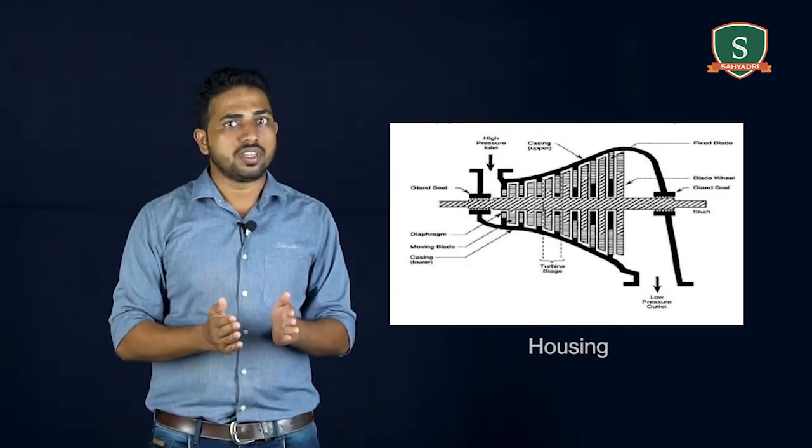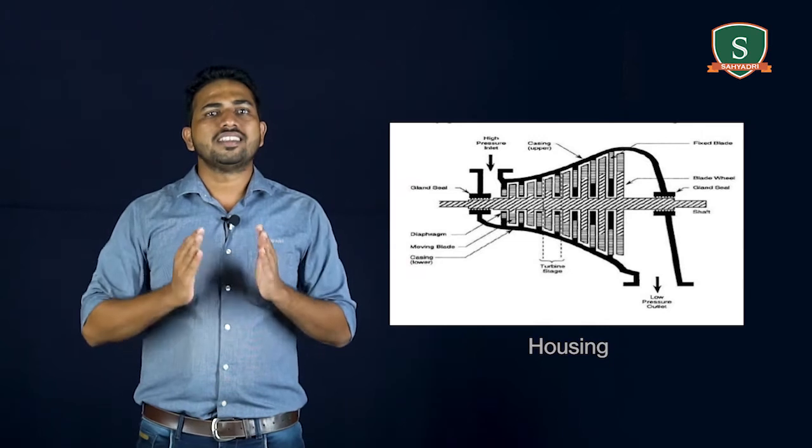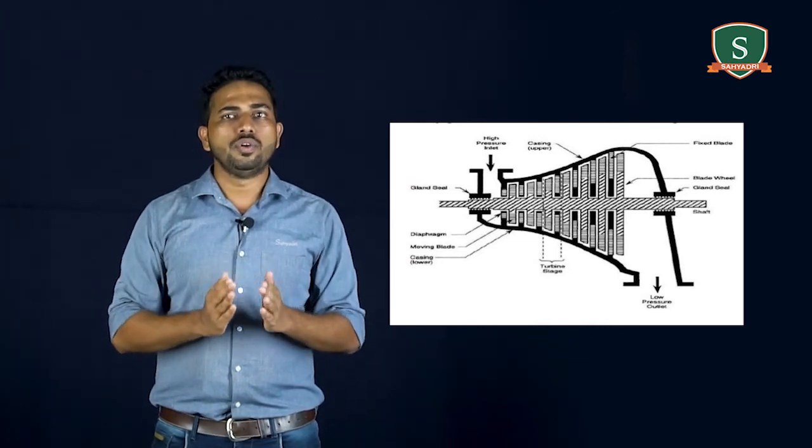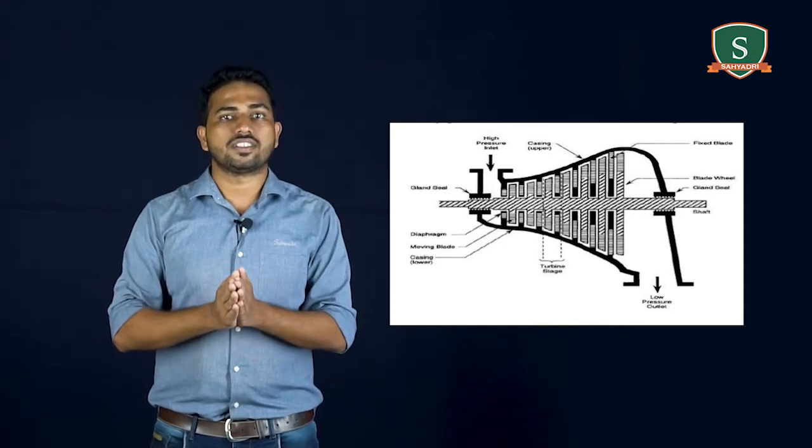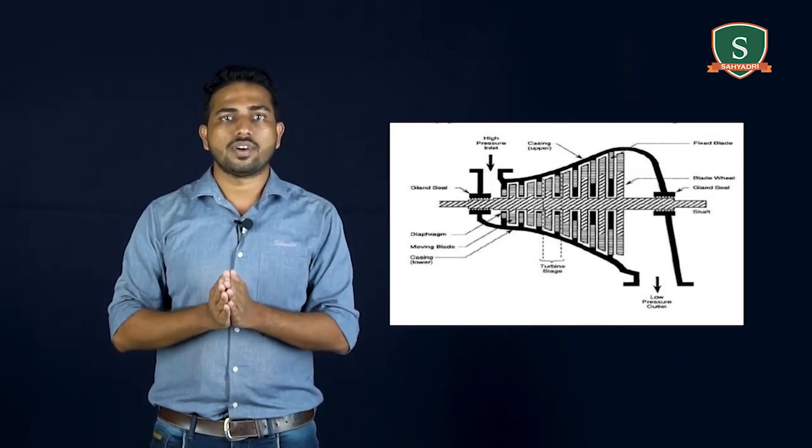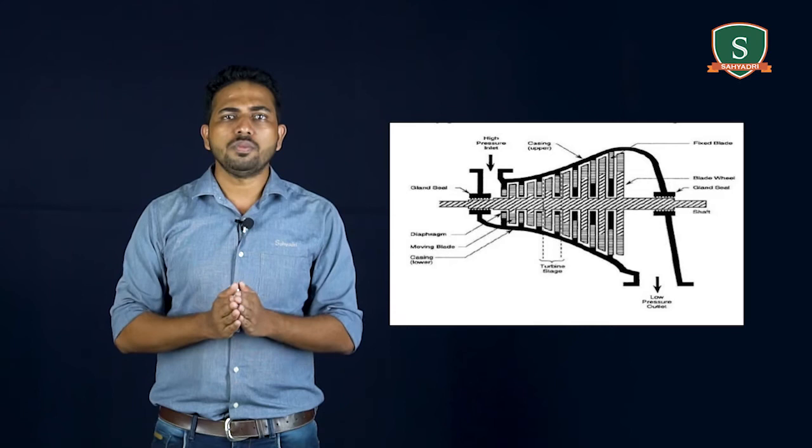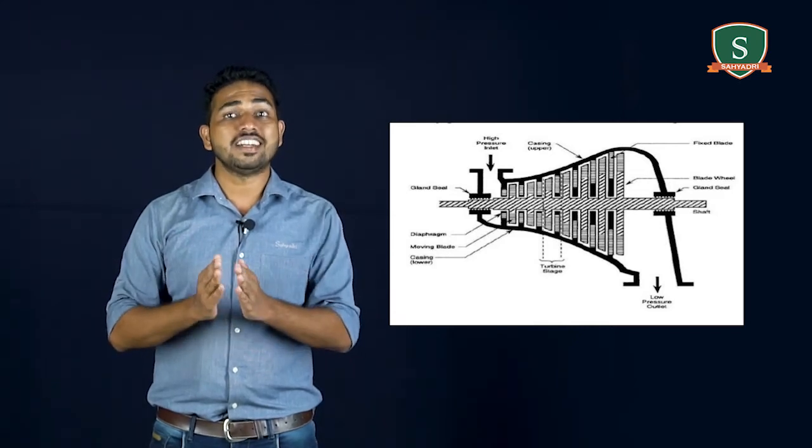Now housing. It is used to contain and restrict fluid so that the fluid flows in a given space and does not escape in directions other than those required for energy transfer. The turbo machine which has a housing is said to be enclosed turbo machine.